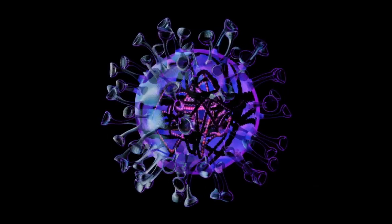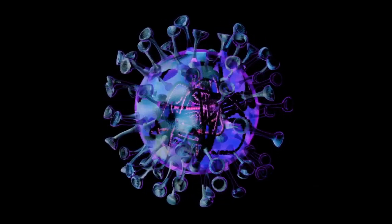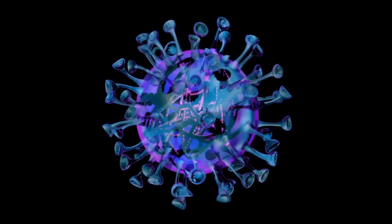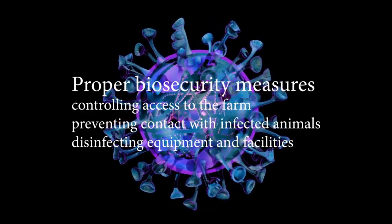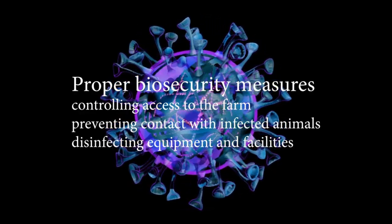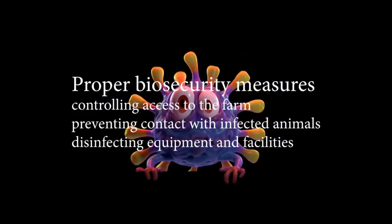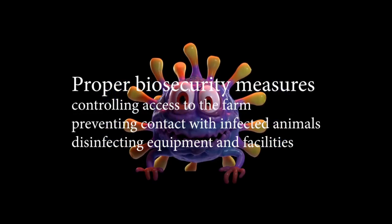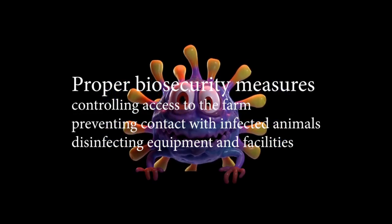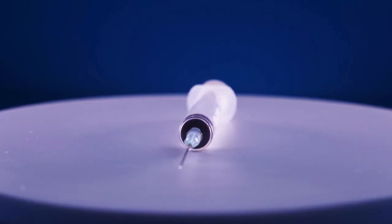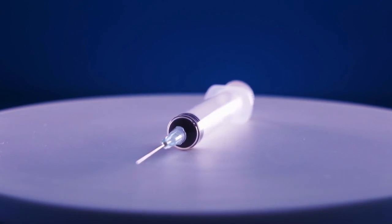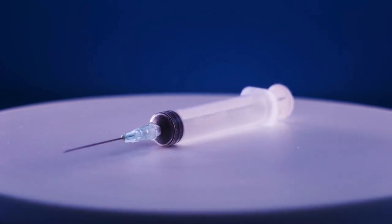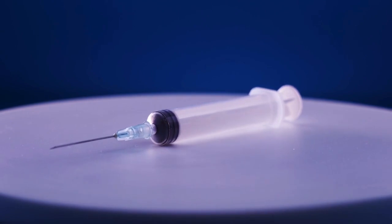Preventing and controlling disease in sows is essential to maintaining optimal reproductive health and high fertility rates. Proper biosecurity measures — such as controlling access to the farm, preventing contact with infected animals, and disinfecting equipment and facilities — can help prevent the spread of diseases. Vaccination programs can also be used to protect sows against common diseases that can negatively impact reproductive performance.